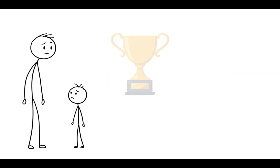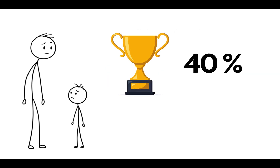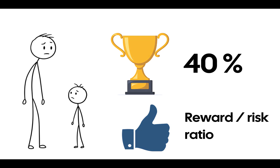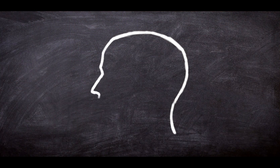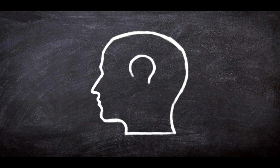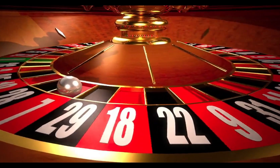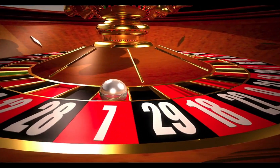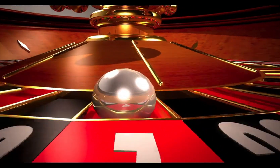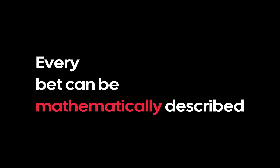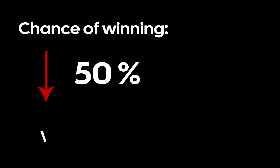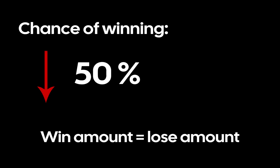Why is this important? Even if you only win 40% of the time, with a good reward-to-risk ratio you can still be in the plus. Psychologically, we all want a higher win rate and as little loss rate as possible — guessing correctly 80–90% of the time. But it all starts with a simple thing: every bet can be mathematically described. If the chance of winning is below 50% and the winning amount equals the losing amount, your game is doomed to lose.